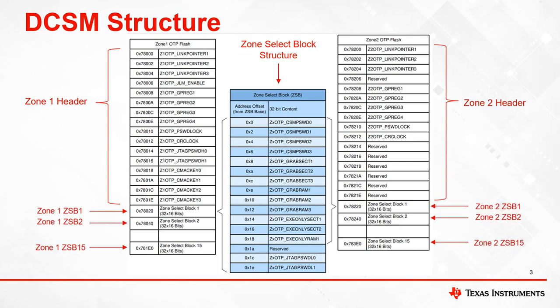Multiple configurations are possible because there are multiple instances of the zone select block, which allows the user to program security settings in an unprogrammed zone select block when they wish to update these settings. To use an unprogrammed zone select block, the user must update a setting in the zone header referred to as the link pointer. The link pointer is a 32-bit value that is decoded by the DCSM module to determine which zone select block is active.